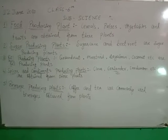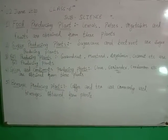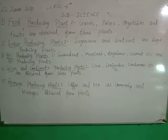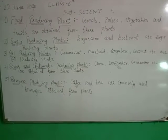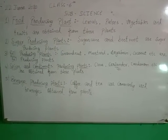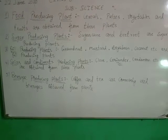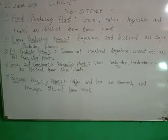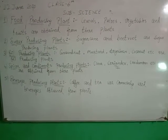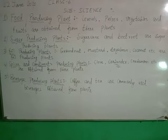Plants that produce food include cereals, pulses, vegetables, and fruits, which are obtained from these plants. For example, vegetable plants, fruit plants, etc.